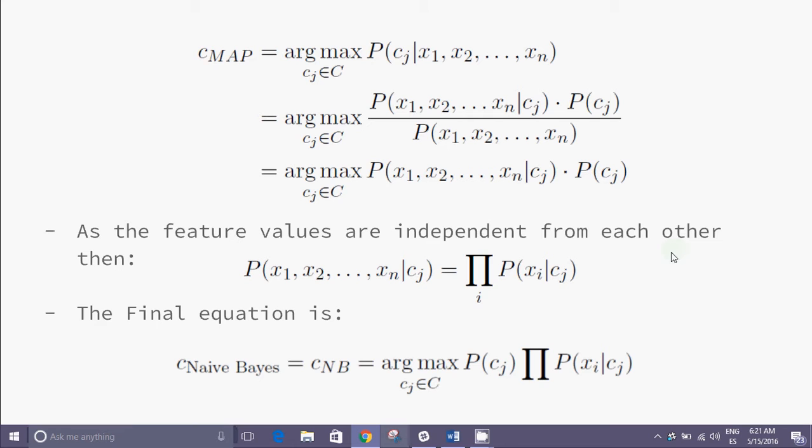So our final equation is P(x1, x2, x3, ..., xn | cj) times P(cj). As feature values are independent from each other, the probability of x1, x2, x3 to xn conditioned to cj is equal to the product of all probability of xi conditioned to cj. So our final equation becomes maximum of P(cj) times product of all P(xi | cj) where cj belongs to capital C.